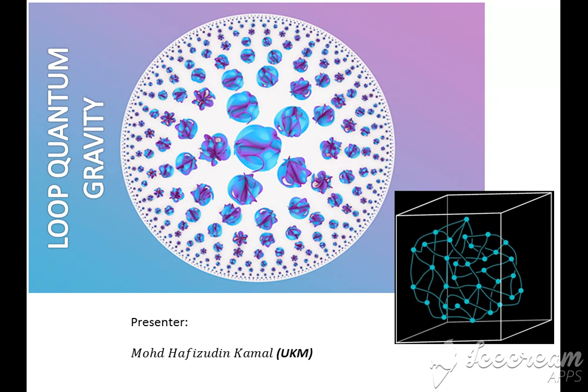Somehow in quantum gravity, space is made up of a network of quantized loops of gravitational fields, which are called spin networks, and the quantization is at the Planck scale.